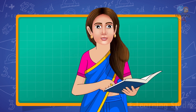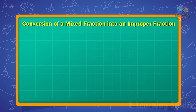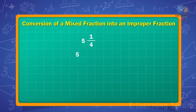Children, let's understand this with the help of some examples. For example, 5 and 1 upon 4 is a mixed fraction. To convert a mixed fraction into an improper fraction, first we multiply the denominator of the proper fraction to the whole number attached with it.